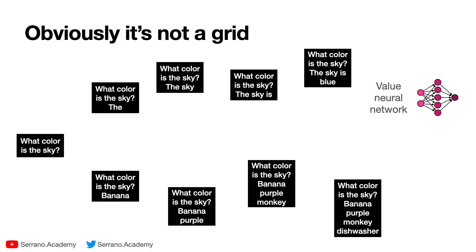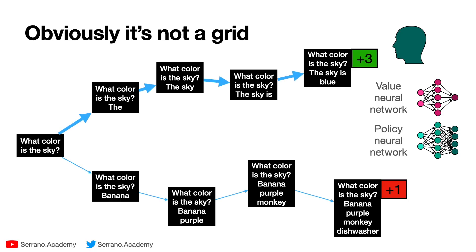What does the value neural network do? Well, since we have the human annotator giving these three points and one point based on the rankings it gives them, the goal of the value neural network is to learn the points that the human annotator will give to each one of the responses. And what does the policy neural network do? Well, the policy neural network learns these probabilities. In other words, the policy neural network learns to give high probabilities when the next word is very likely to be the one there and low probabilities when it's not.